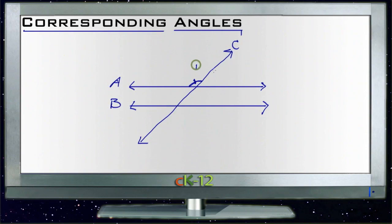One, two, three, and four that are formed by line A and line C. And then we look at another four angles that are formed by lines B and C. We have one, two, three, and four.